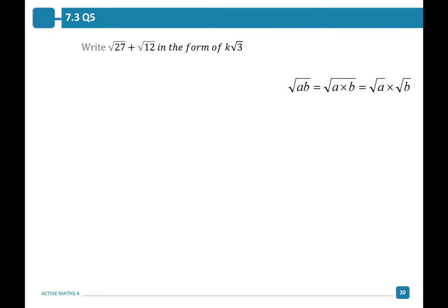Let's try another one. Write root 27 plus root 12 in the form K root 3. Remember that the square root of AB is equal to the square root of A times the square root of B. To write root 27 plus root 12 in the form K root 3, we must write both terms in the form K root 3 first. Root 27 equals root of 9 times 3 — find the factors of 27 which include 3. Simplifying this we get root 9 times root 3, and root 9 is a perfect square which can be written as 3 root 3.